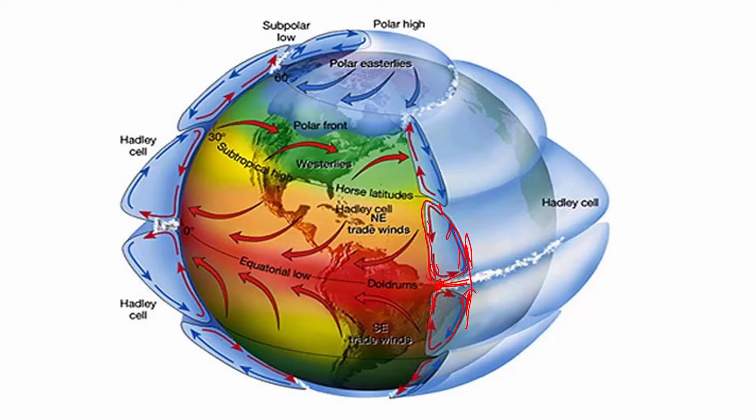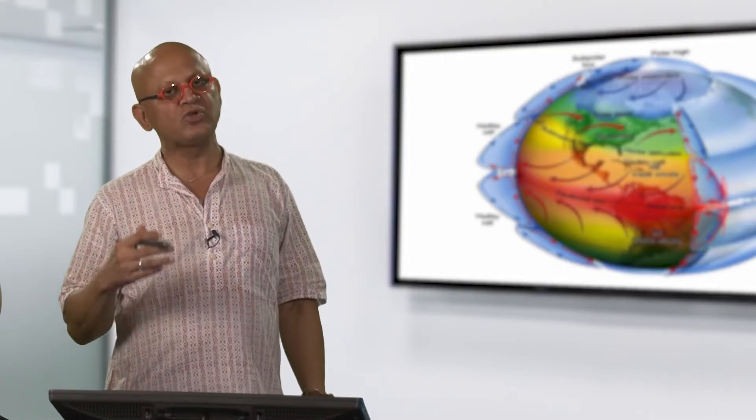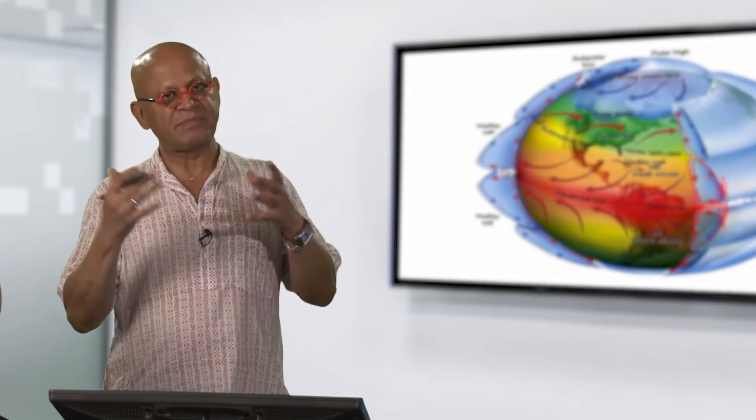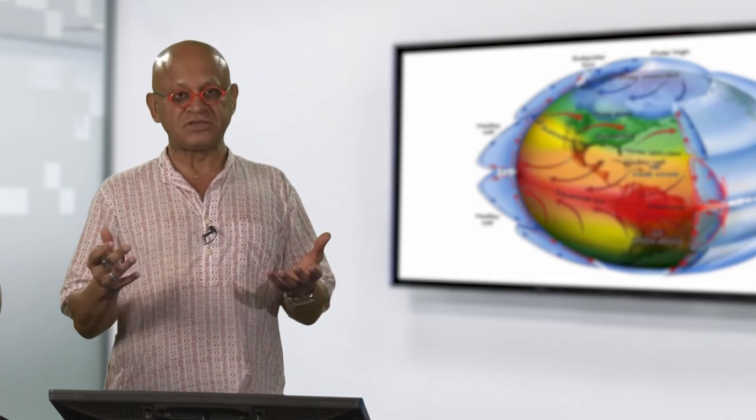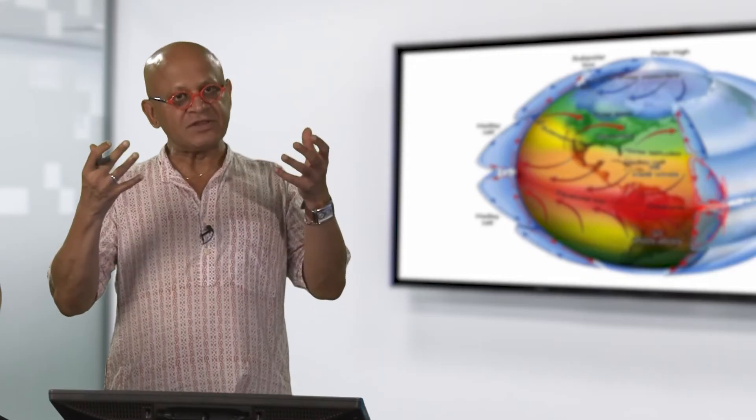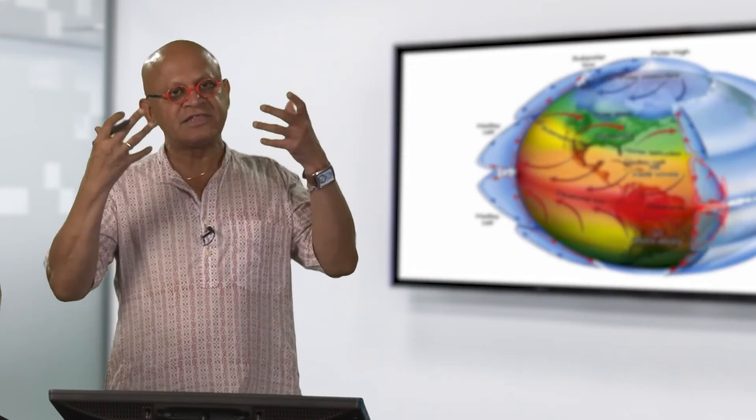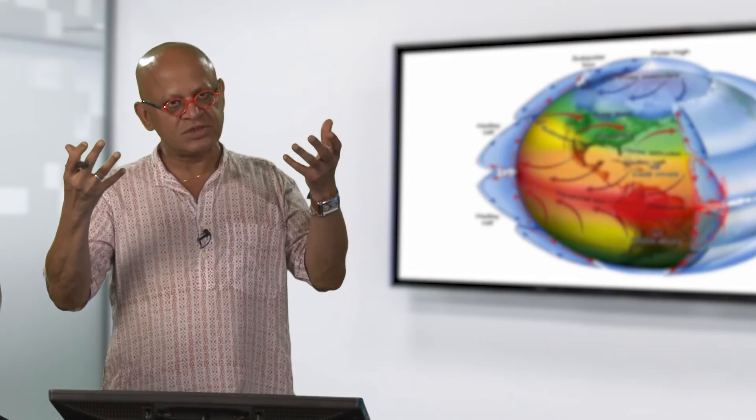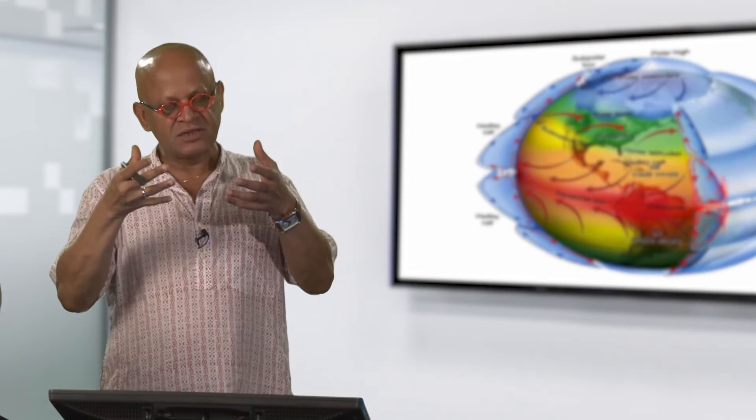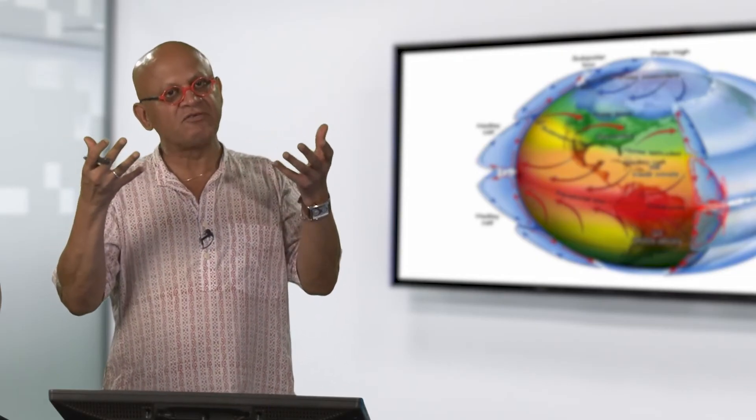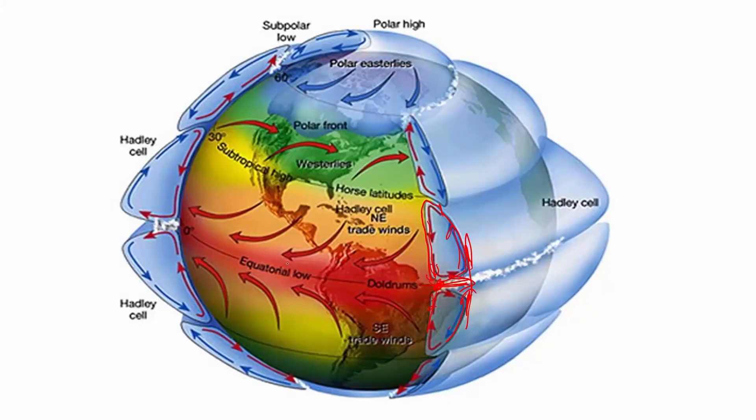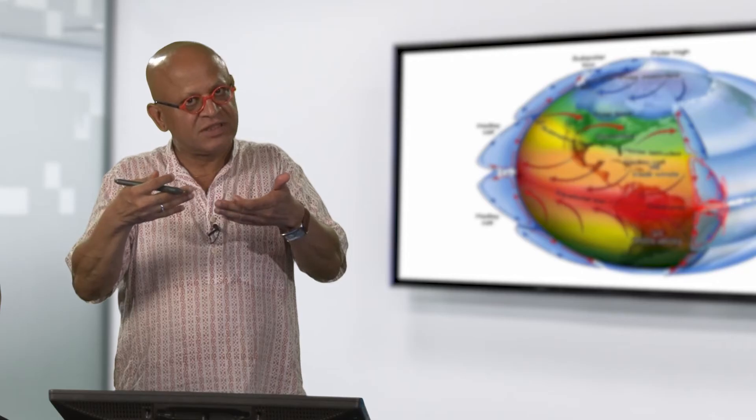So this rising air as we said is going into lower pressure, so it is expanding. There is evaporation because of the warm temperatures near the surface. So the air is filled with moisture and as the air expands, it cools which means the moisture condenses, forms clouds and there will be rain. So wherever there is rising air and convergence, there is rain.